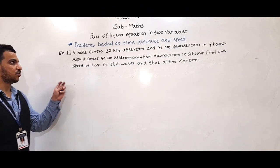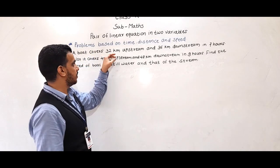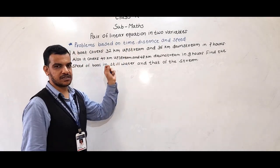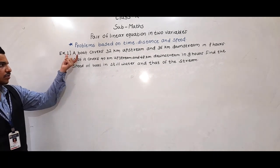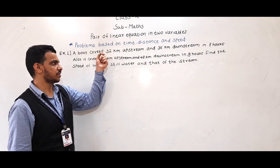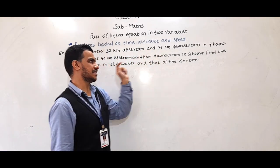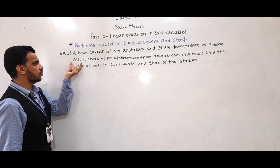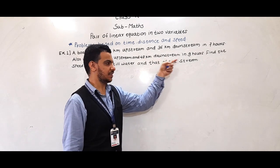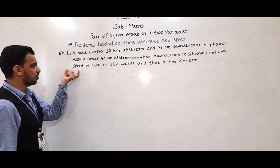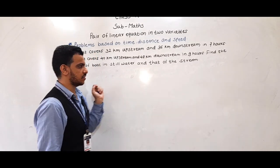Hello students. Today we are going to learn a new type of problem based on time, distance and speed. The first example: a boat covers 32 km upstream and 36 km downstream in 7 hours. Also it covers 40 km upstream and 48 km downstream in 9 hours. Find the speed of the boat in still water and that of the stream.